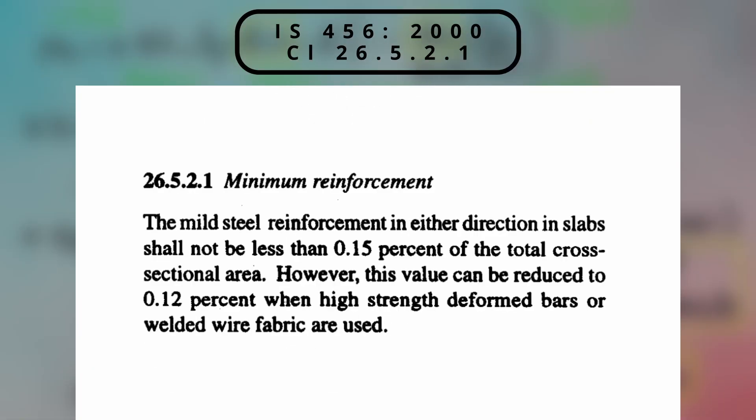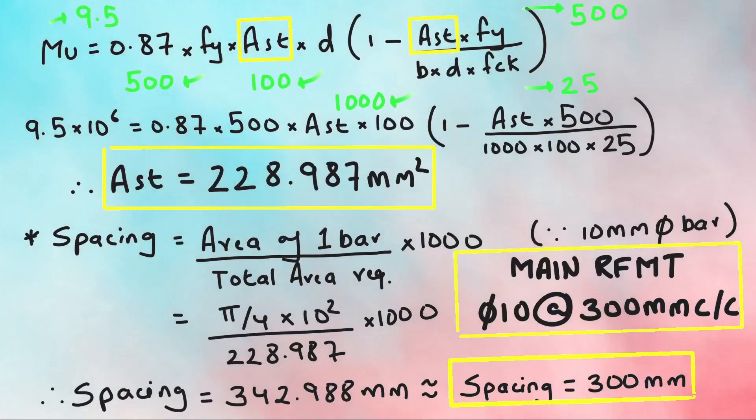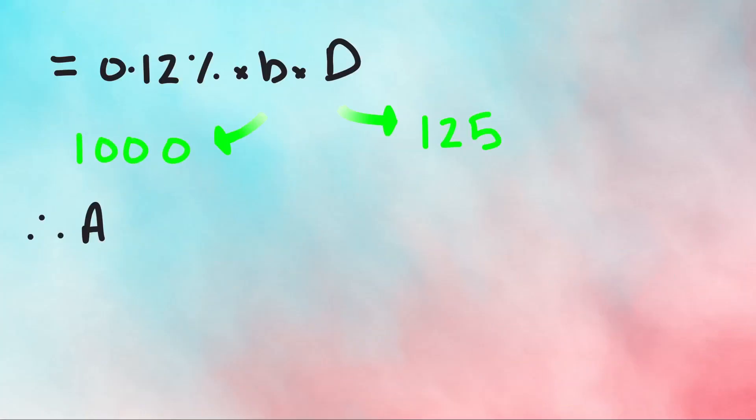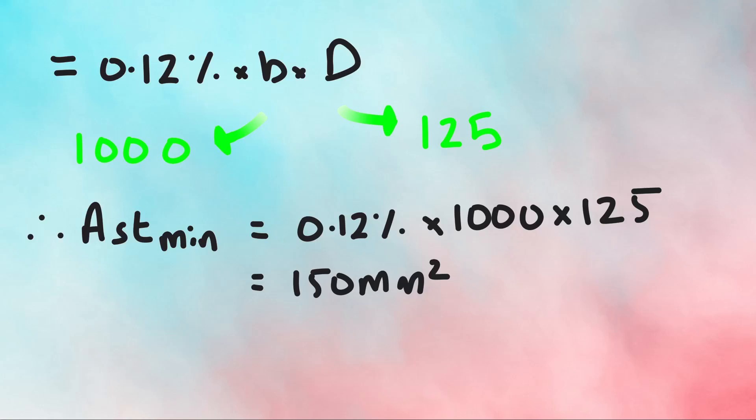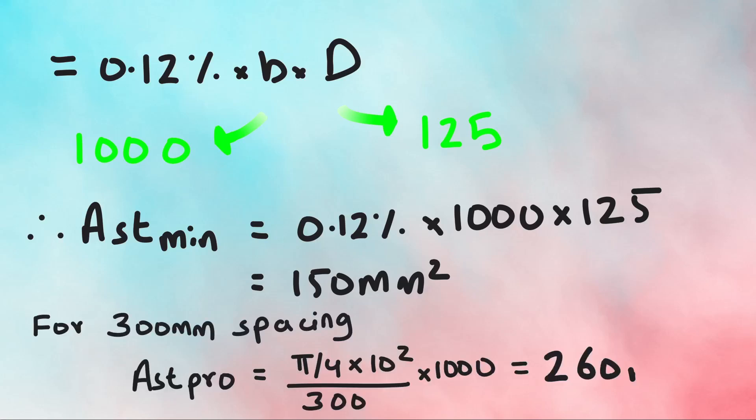Before proceeding, we also have to check whether our design meets the minimum reinforcement criteria as per clause 26.5.2.1, which says minimum reinforcement shall not be less than 0.15% for mild steel, Fe 250, and 0.12% for high strength deformed bars, Fe 415 and Fe 500. Since we are using Fe 500 steel, 0.12% of total cross-sectional area can be calculated by substituting the values, which gives minimum required area as 150 mm square, which is less than the provided area. For 300 spacing, AST of 1 bar divided by spacing into 1000 gives 260 mm square. Hence the design is safe.